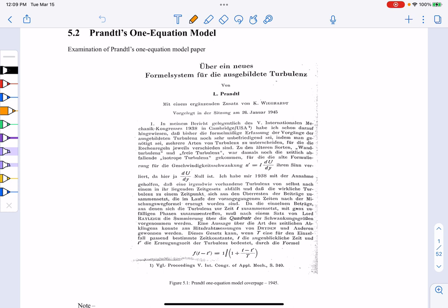Then in this same class, we're going to look at the Baldwin-Barth turbulence model, which was one that took the K-epsilon model and reduced it to one equation. And it was considered to be the first closed-form turbulence model because you didn't have to specify anything else about the solution, like distance to the wall or something.